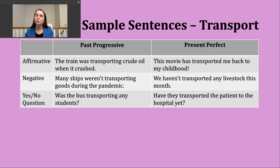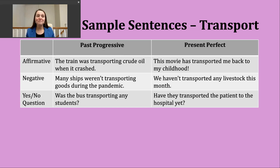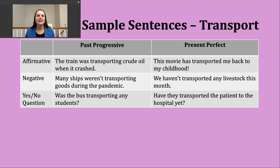Here's another example: 'Many ships weren't transporting goods during the pandemic.' You've probably heard or read about all of the many transportation issues we had in 2020 that carried on into 2021, and some might even say 2022. Now, to make a yes or no question in the past progressive, we start with 'was' or 'were,' then the subject, then the -ing form of the verb. For example: 'Was the bus transporting any students?' — perhaps someone is sharing an event and we want to know if the bus was carrying students at the time.